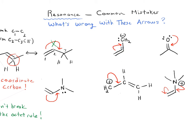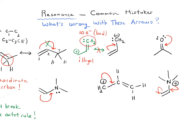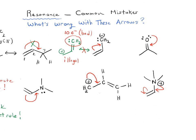The same problem applies to the next resonance form: we'd be breaking this carbon–carbon pi bond and forming a new one, which would require five bonds to carbon — 10 electrons — which is not allowed. That is also illegal. Again, a five-coordinate carbon breaks the octet rule.